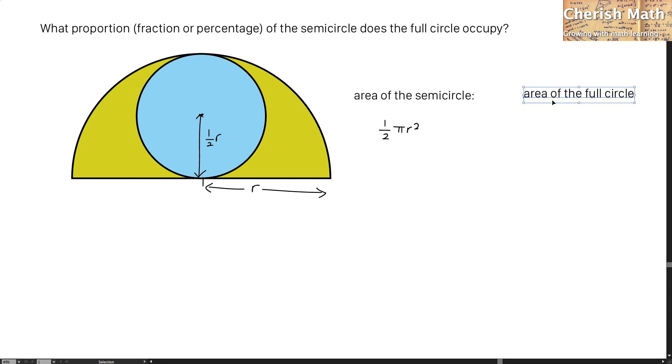For the area of the full circle, which is in the blue color, that is pi, and the radius is 1 half r, square of the whole thing. And I'm going to get 1 quarter pi r squared.